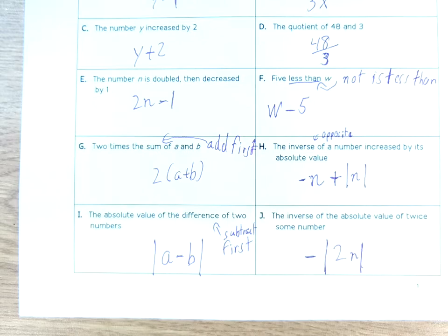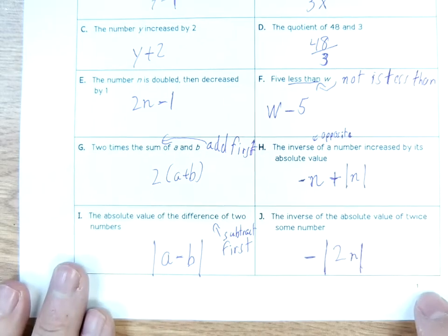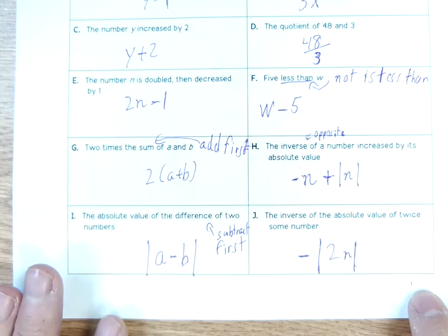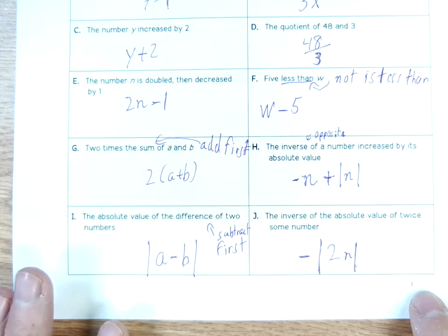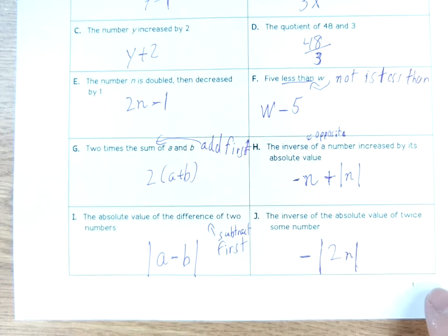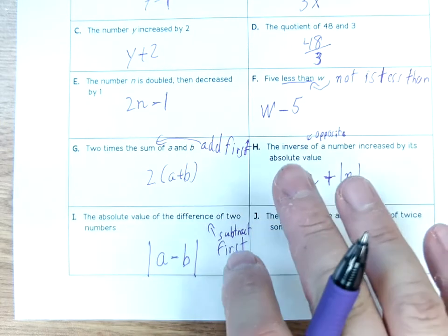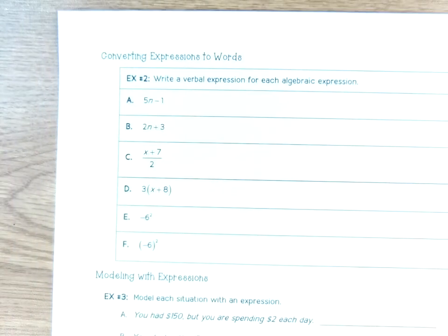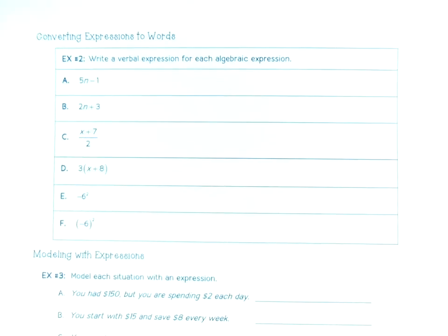That's page 1. Moving on to page 2: converting expressions into words. This is backwards to what we just did on page 1 — on page 1 we took words and made them into expressions. Now we're going to make the expressions into words.